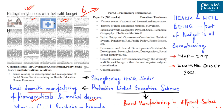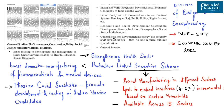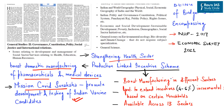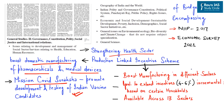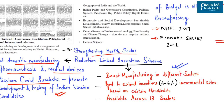The article says that the health and well-being component as foreseen by the government is all-encompassing, including not only health but also sanitation and vaccine efforts. It mentions strengthening the health sector through production-linked incentive schemes to boost domestic manufacturing of pharmaceuticals and medical devices, and Mission COVID Suraksha to promote development and testing of Indian vaccine candidates.